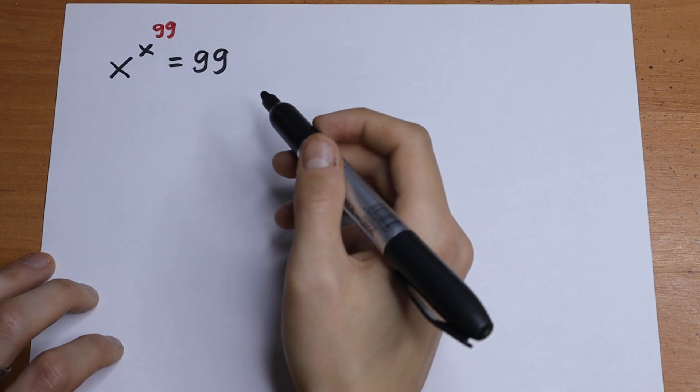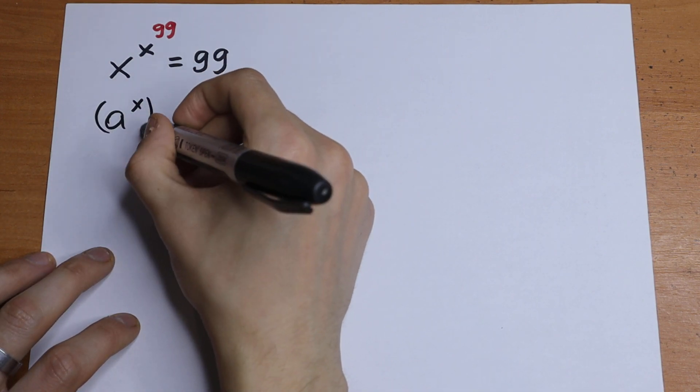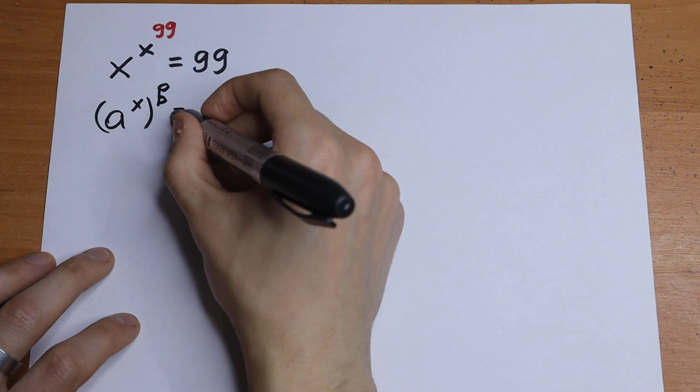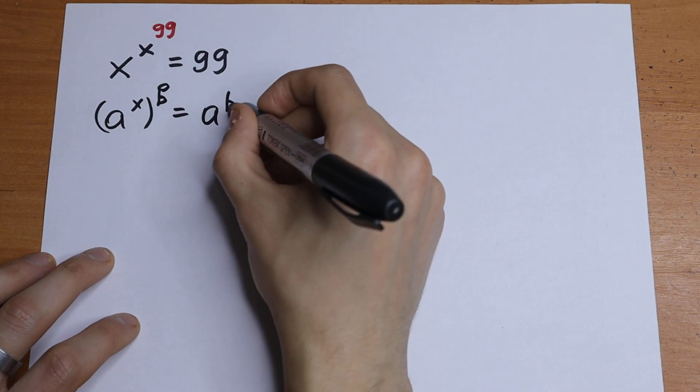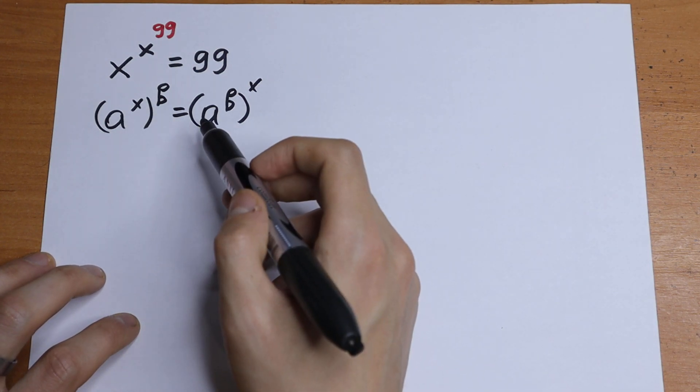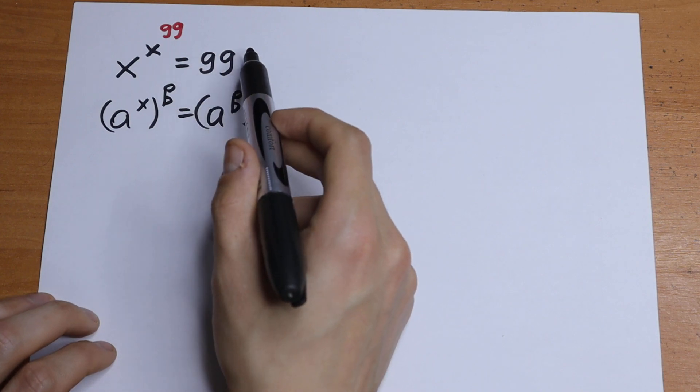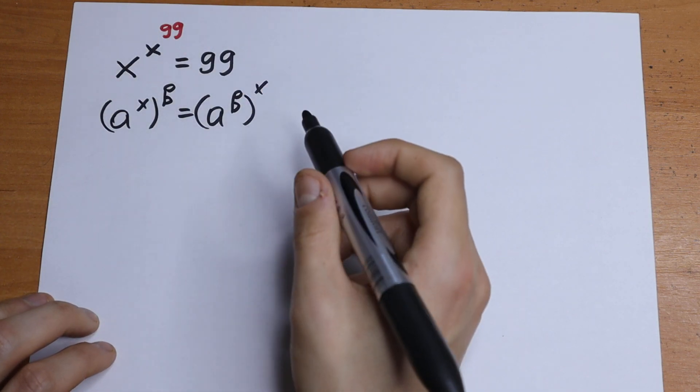We need to know about the rule of interchange. If we have a to the power x raised to the power b, we can write it as a to the power b, all raised to the power x. If we raise both sides by 99th power, we can use this rule of interchange.